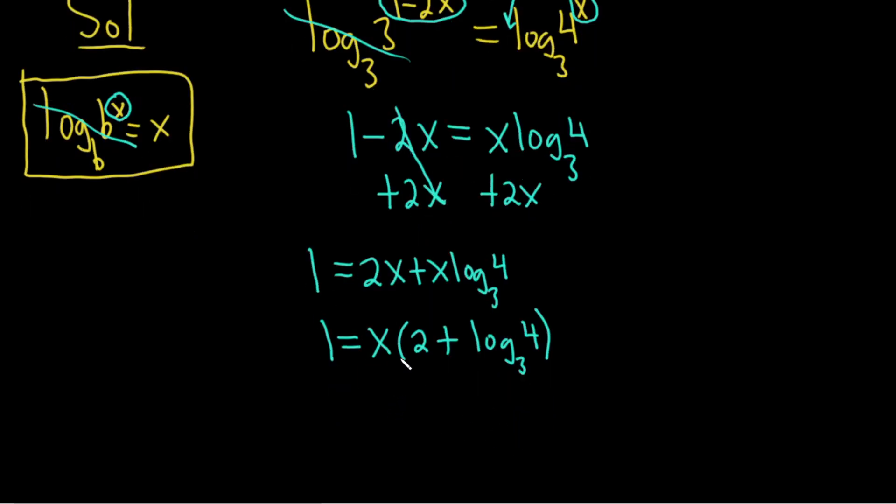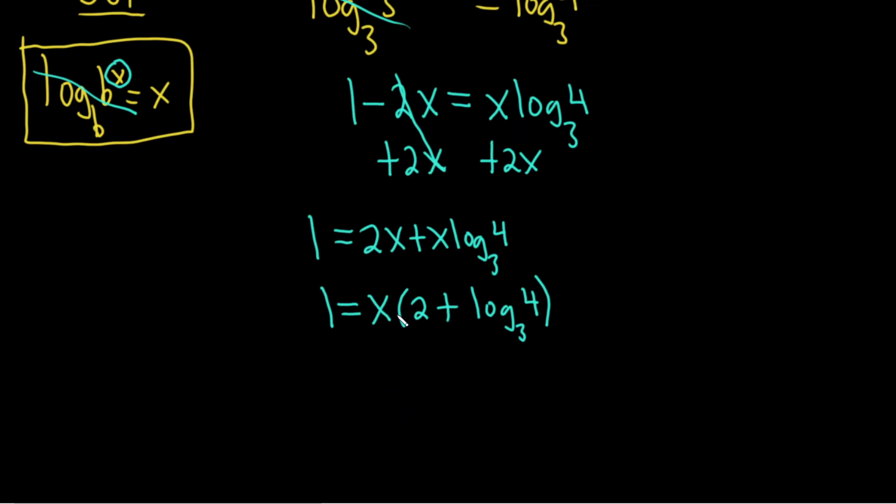Because this is being multiplied by x, what we can do now by all of this, rather, is we can divide by all of that. So 2 plus log base 3 of 4. Same thing over here. 2 plus log base 3 of 4. Boom.